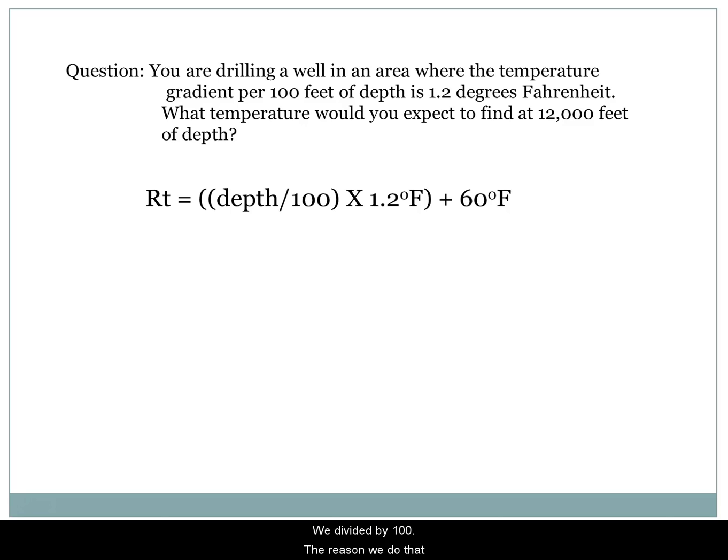We divide it by 100 because we're given a temperature gradient based upon a hundred feet. In this problem, for every hundred feet we drill down, the temperature increases by 1.2 degrees Fahrenheit. So I want to find out how many 100-foot sections we have. We do that by dividing the true vertical depth by 100.